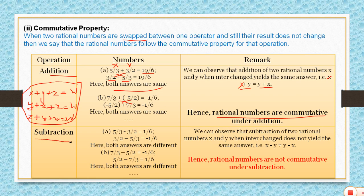Now let's see whether commutative property works for subtraction. When 5 by 3 is subtracted from 3 by 2, the answer is 1 by 6. Now changing the position: 3 by 2 minus 5 by 3 gives minus 1 by 6. The answers are different — one is negative and one is positive.